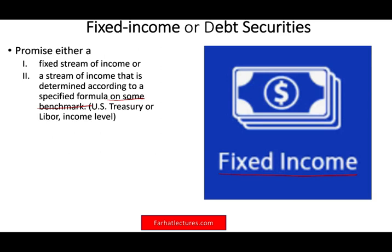For example, like U.S. treasury — they would say we're going to pay you U.S. treasury rate plus 2%. As the U.S. treasury rate goes up, your rate goes up; as the U.S. treasury rate goes down, your rate goes down. So your income from that fixed income is determined by some formula. Or sometimes we could use LIBOR. Sometimes the income level might vary — for example, if the company makes more profit — but that's very rare. Generally speaking, it's either fixed or based on some formula.